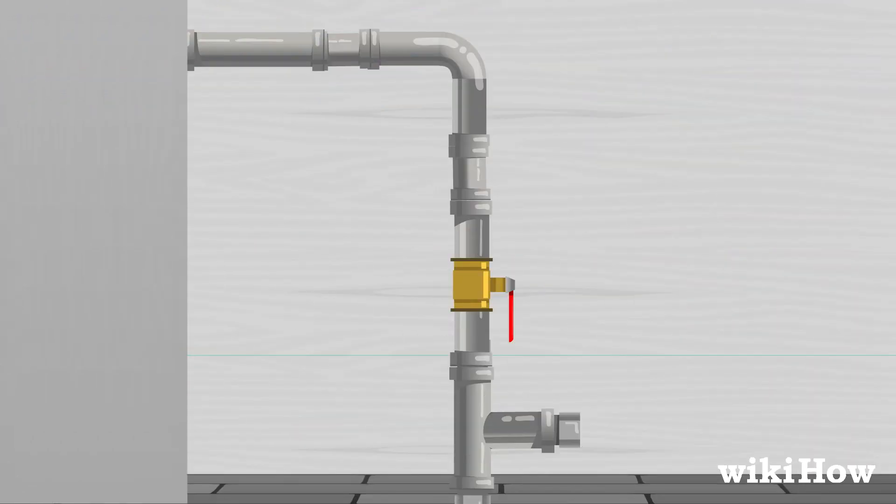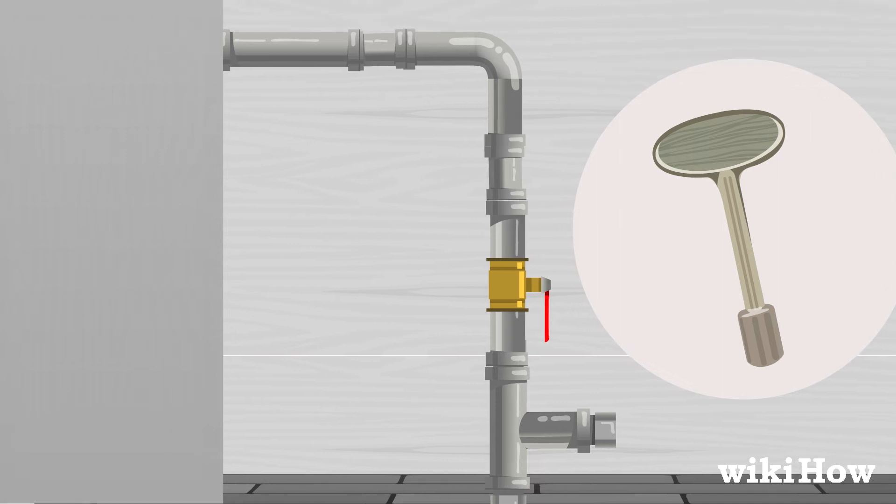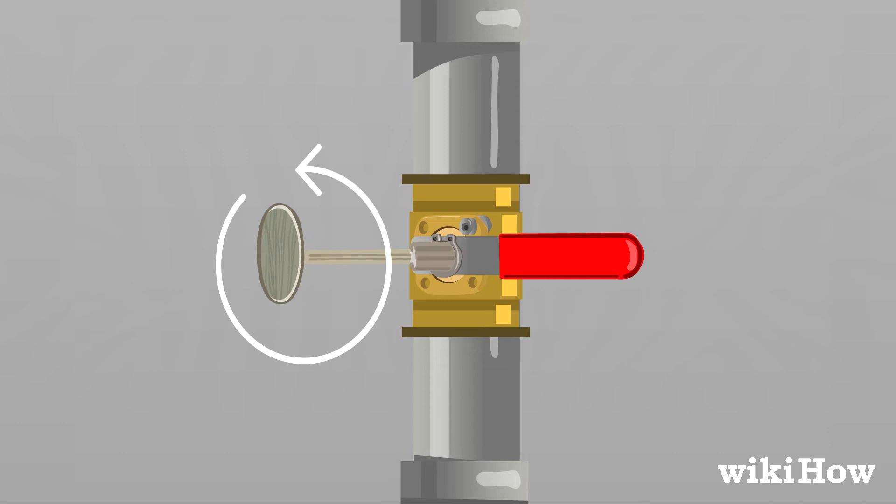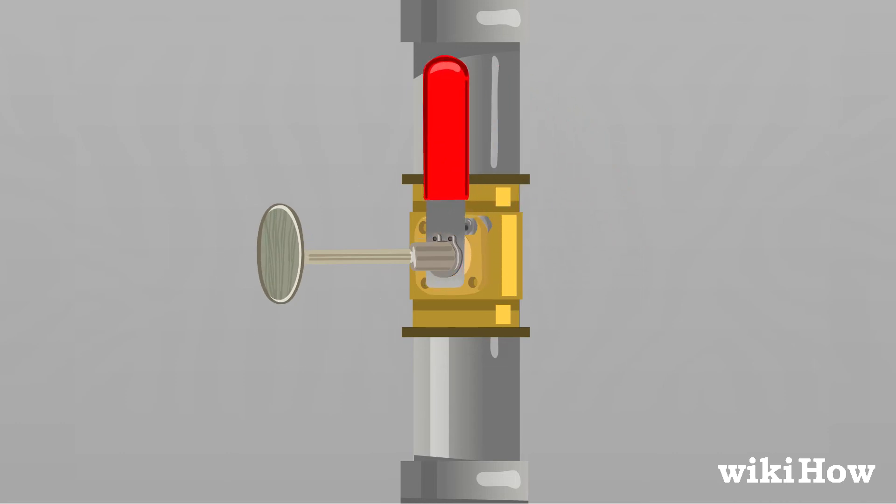To turn the main water valve, you'll need a water key, which you can get at a hardware or home supply store. Use the key to turn the valve counterclockwise about a fourth turn at a time until the valve is completely open.